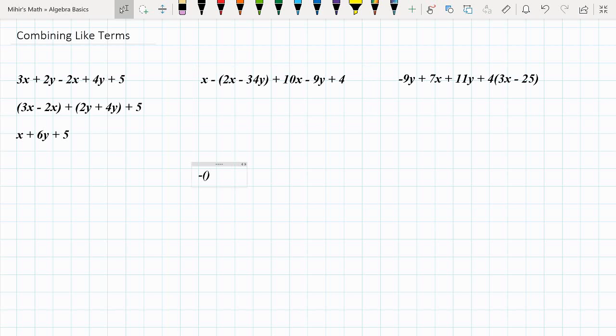So I'm just going to rewrite it: x minus (2x - 34y) plus 10x minus 9y plus 4. So what happens in such a case, the way I like to remember it: this negative sign basically multiplies with all of the units in this bracket. So this is a negative multiplied by the 2x, and this is a negative multiplied by negative 34y.